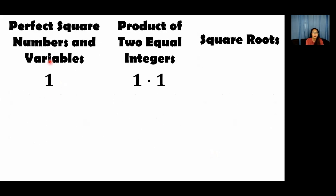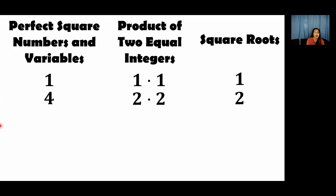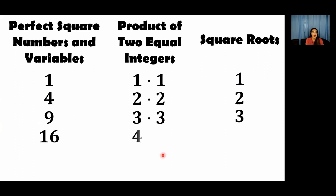So the square root of 1 is still 1. Next, we have 4 — it is a perfect square number because 2 times 2 is 4, so the square root of 4 is 2. We have 9 — its factors are 3 times 3, so the square root of 9 is 3. Next is 16 — the two equal integers are 4 times 4, so the square root of 16 is 4. And we have 25 — that is 5 times 5, so the square root of 25 is 5.